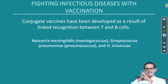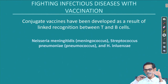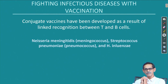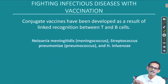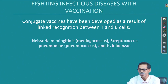After the attenuated vaccine, now I am going to talk about the conjugate vaccine. Conjugate vaccines have been developed as a result of linked recognition between T and B cells. I mentioned this briefly in the first lecture on these topics. If we would like to activate the immune system against a polysaccharide, the problem is that T cells are not going to be activated by polysaccharide. So a new conjugate vaccine idea came — it was a very nice and clever idea that was proposed and used.